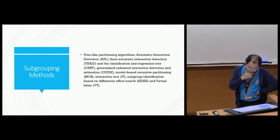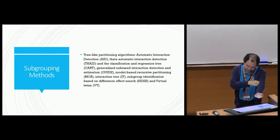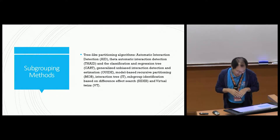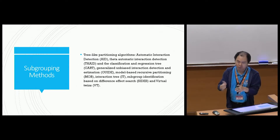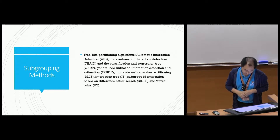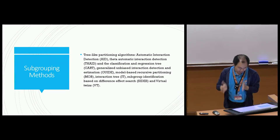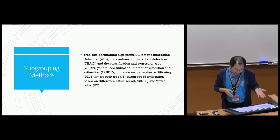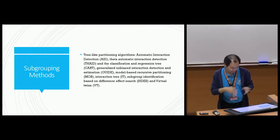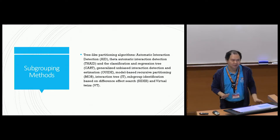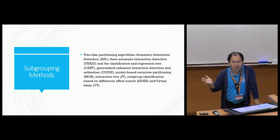The earliest algorithm is called AID, then THAID, then CART — these are very ancient algorithms. More recently, there is GUIDE, a relatively more recent algorithm that uses local polynomial for different regions. There is also model-based recursive partitioning, interaction tree, and the SIDES and VET methods, the most recent ones developed around 2016 or 2017. All these works have very good performance in practice, many have been applied in clinical trials and received a lot of attention.